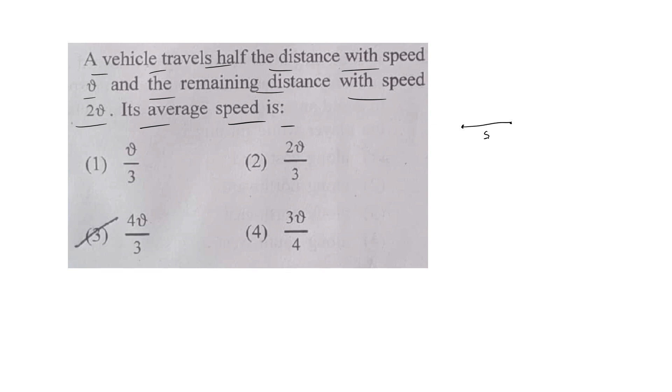Half the distance is going at speed V and the next half remaining distance is going twice the speed. We can call these points A, B, C if you want. Okay, so average...